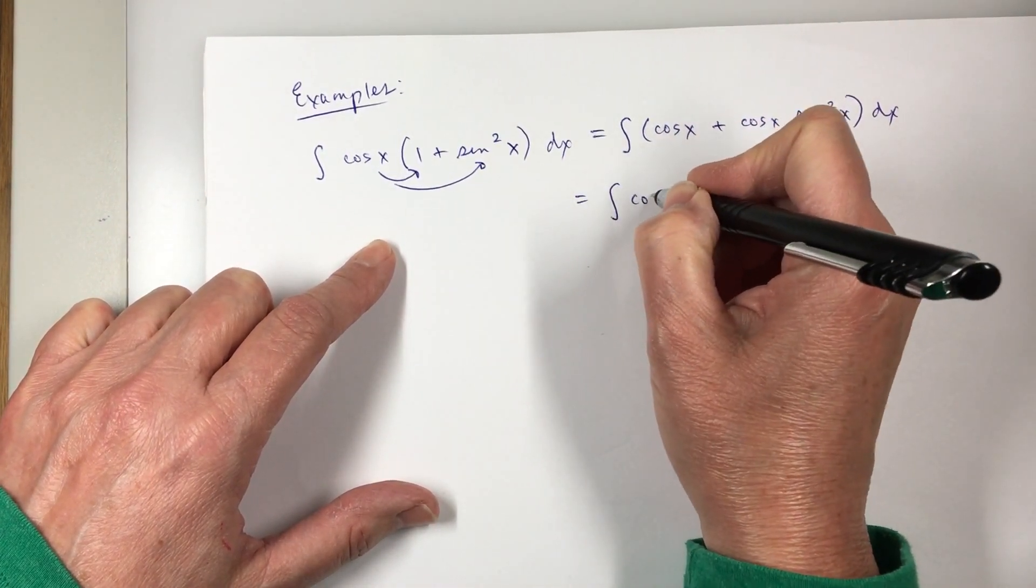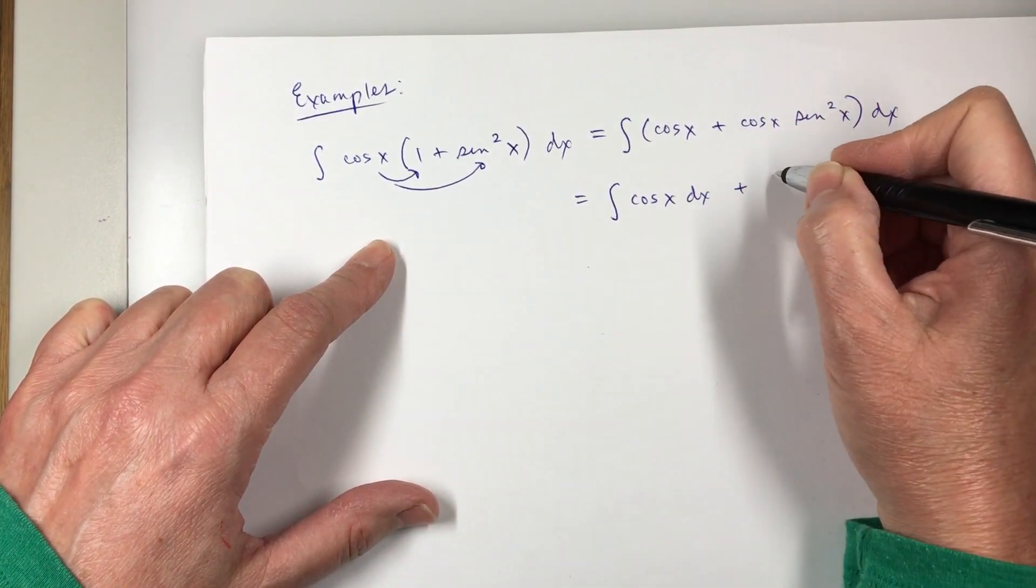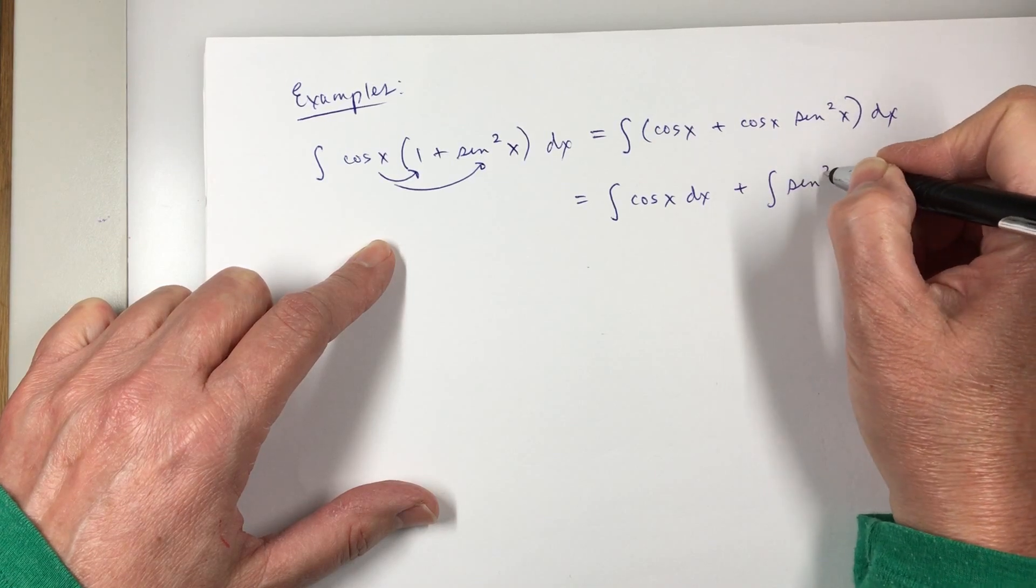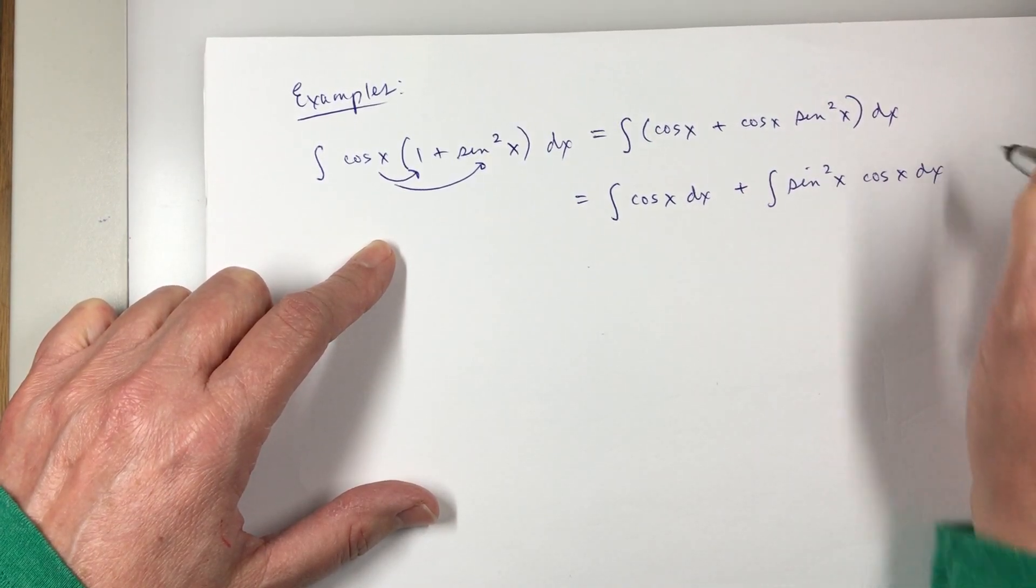And so that's going to be integral of cosine x dx plus the integral of—I'm going to write sine squared x in the front—cosine x dx.